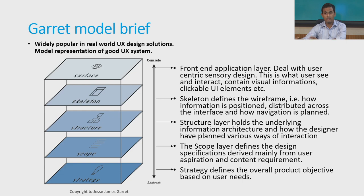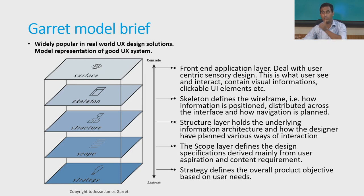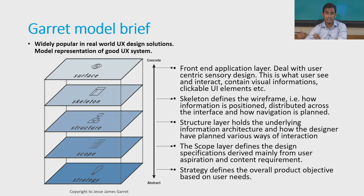What kind of sensory design can we have at the surface layer? As humans, we have five senses: eyes for vision-based interaction elements, auditory senses for creating nice sound effects, and the sense of touch to create UI elements that need tactile feedback. Those kinds of things are implemented at the surface layer, and as a user, we always interact with the surface layer.